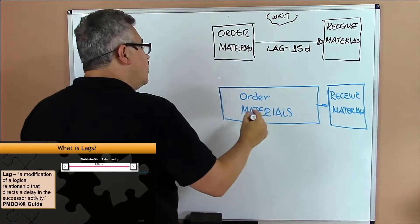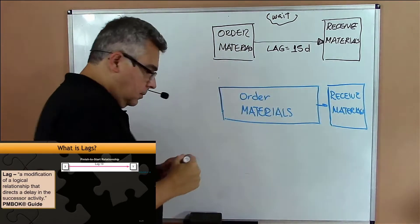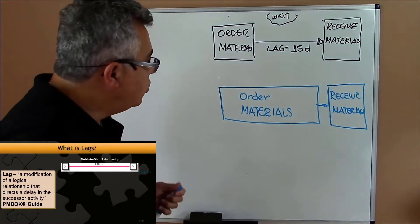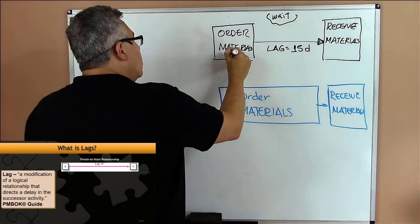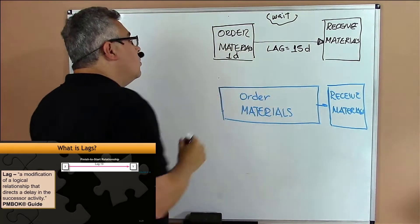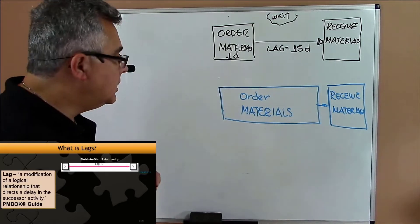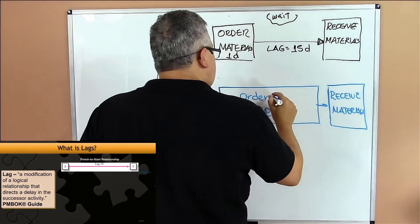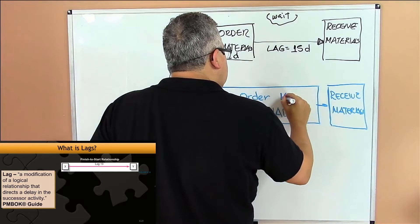Let's suppose you need just one day to order the materials - one day to order and 15 days to receive - and here you put 16 days.